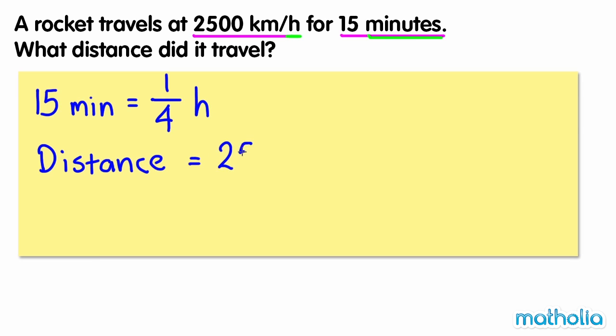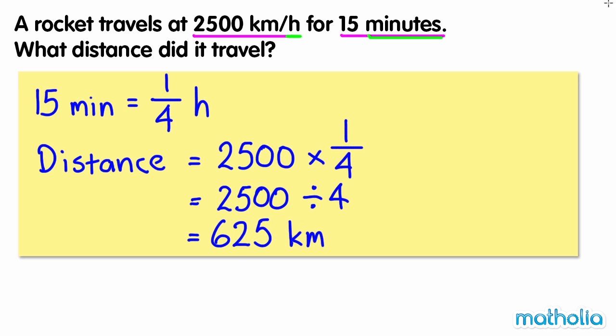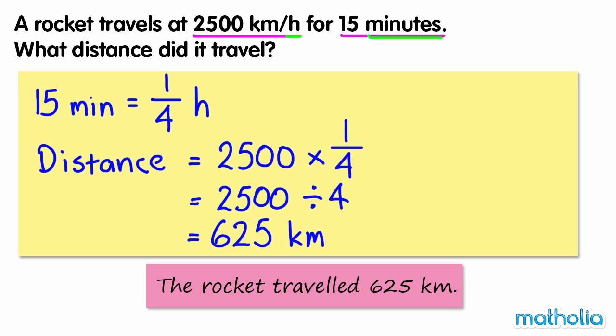So the distance is equal to 2,500 multiplied by 1 quarter. Multiplying by 1 quarter is the same as dividing by 4. 2,500 divided by 4 equals 625. So the rocket traveled 625 km.